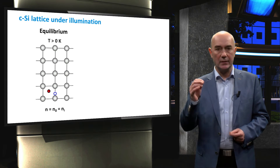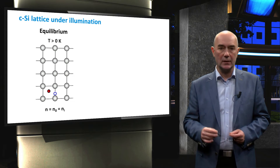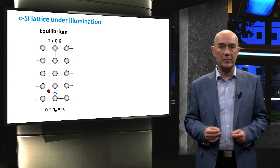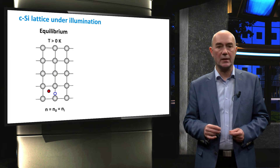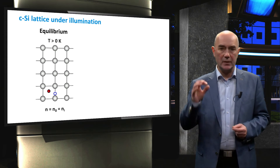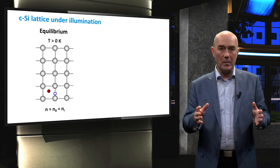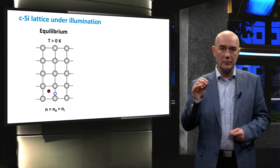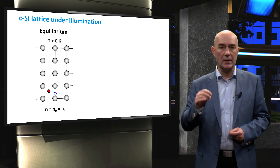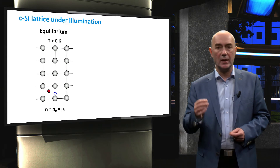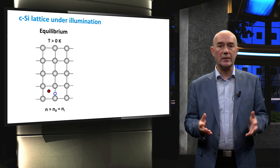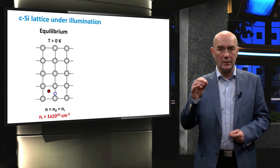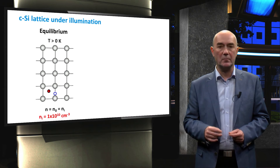Let's start by looking at an intrinsic semiconductor. Here you see an intrinsic crystalline silicon at thermal equilibrium using a bonding model representation. At a temperature above zero Kelvin, mobile electrons and holes are present in the material. The concentration of electrons and holes is equal to the intrinsic concentration Ni, which in crystalline silicon at room temperature is 1×10¹⁰ per cubic centimeter.